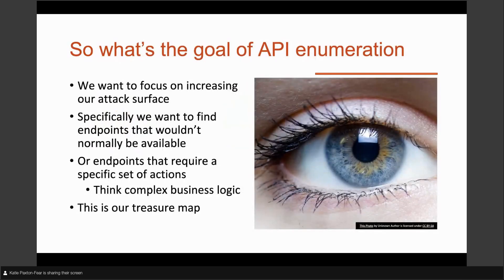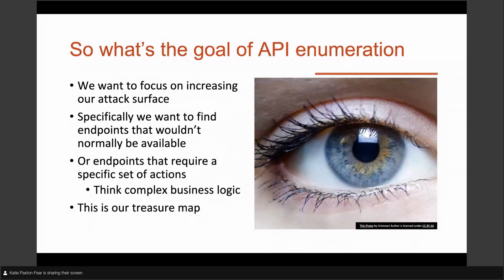The primary goal of API enumeration is to increase our attack surface — things we know we can hack. If you're on the blue team with a big list of APIs, that's great. But if you don't have one, attack surface mapping becomes challenging, even for developers, because people make API endpoints, use them once, and then completely forget they exist. We want to find those endpoints that wouldn't normally be available — ones missed in documentation or OpenAPI specifications.